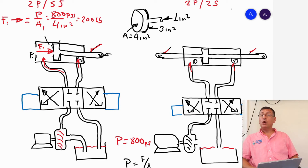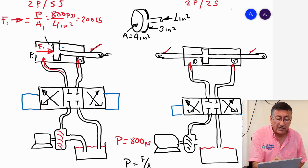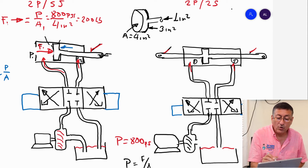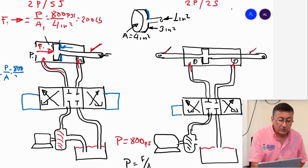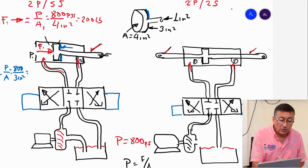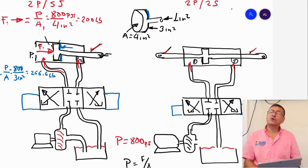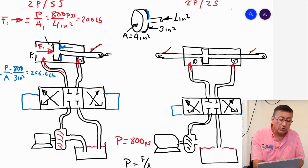What about Force Number Two — the force in the other direction? Force Number Two equals the pressure times the rod-side area: 800 divided by three square inches, which equals 266.6 pounds. The force in the blue direction is bigger than the force in the red direction — they are not equal.